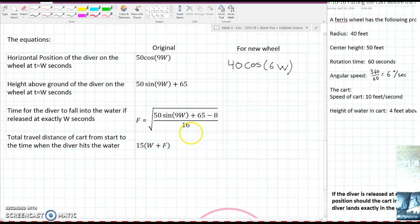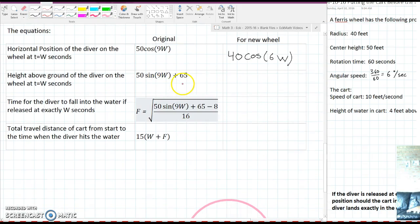Similarly for the height of the diver off the ground it was 50 sine of 9w plus 65. The 50 and the 9 are the same thing. Then 65 represented the center height of the ferris wheel. So for this new one it's going to be 40 sine of 6w and then we're going to have to add on the center height of 50 feet.